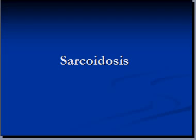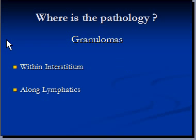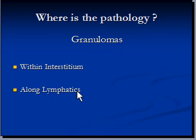This is the third video to continue our discussion about sarcoidosis. We now know that sarcoidosis is a disease in which multiple granulomas or nodules are formed within an organ, mostly in the lungs. So where exactly is the pathology? These granulomas are formed within the interstitium and they develop along lymphatics.